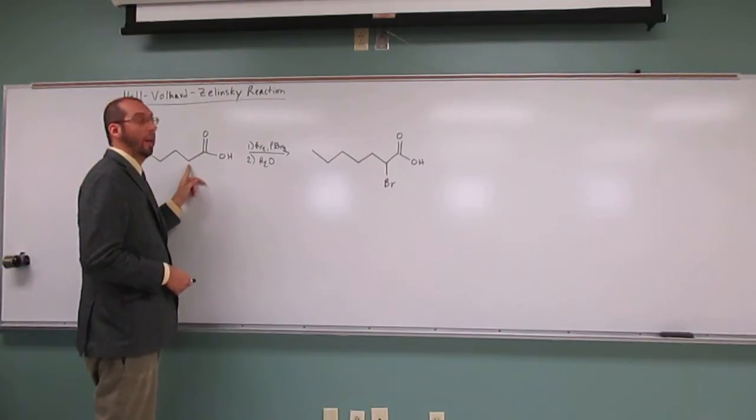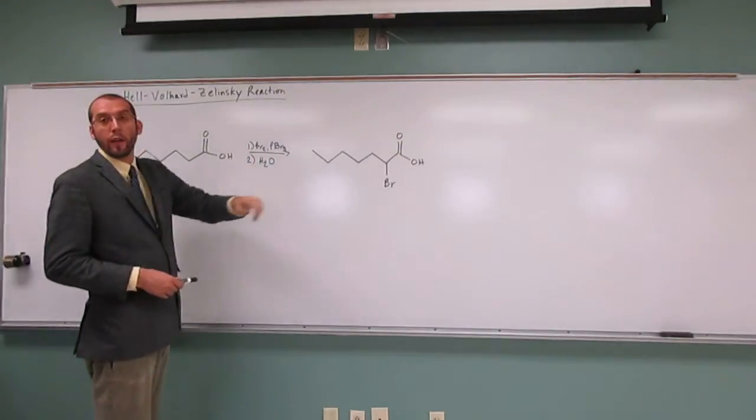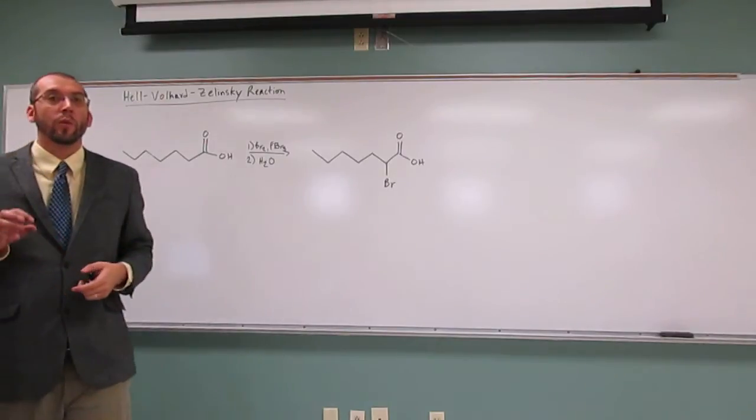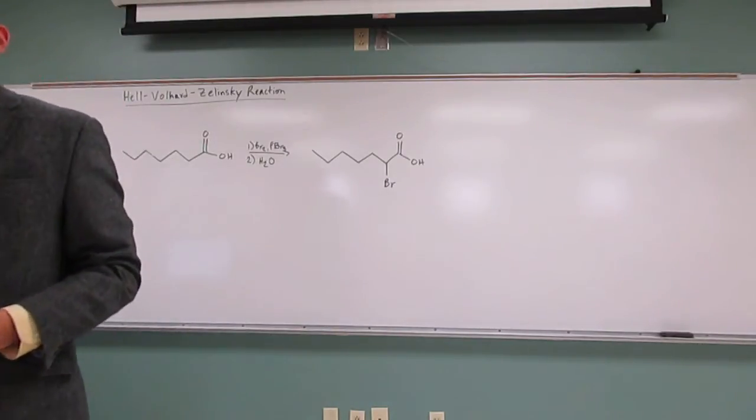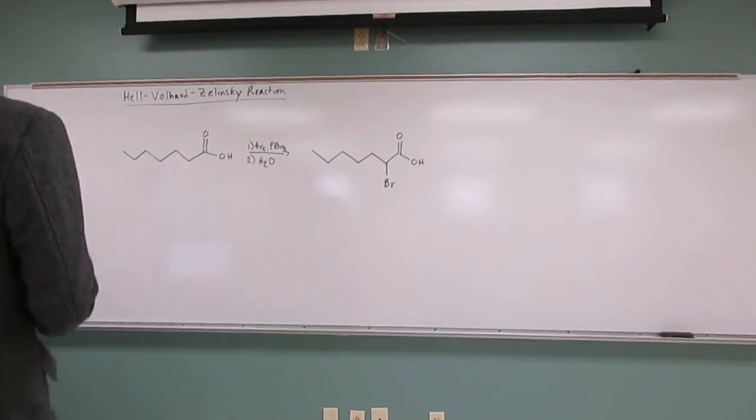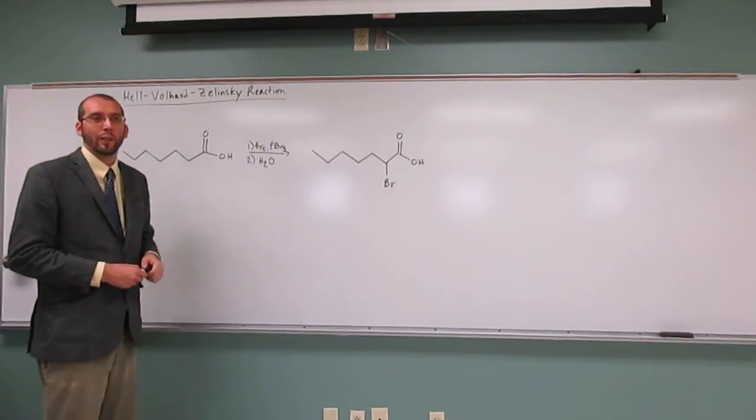if we deprotonated the alpha-proton here, we could make that alpha-bromide there. But we have to make the actual acyl bromide before we can deprotonate that alpha-proton, because this proton here is more acidic than the alpha-proton.